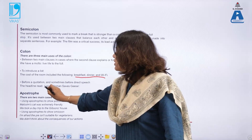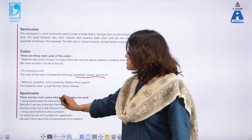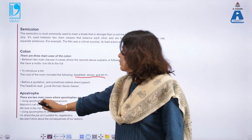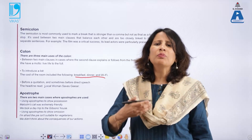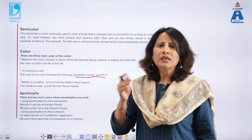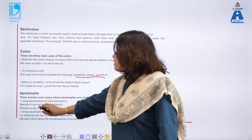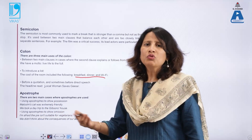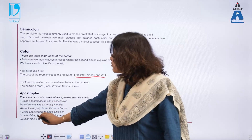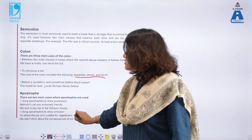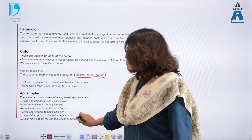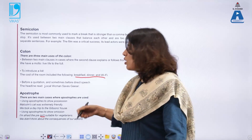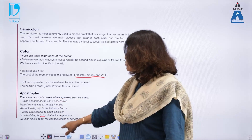There are two main cases where apostrophes are used. First, to show the possessive case — for example: 'Malcolm's cat was extremely friendly,' 'a boy's pen,' 'a girl's scarf,' 'we took a day trip to the Gibson's house.' Second, to show omission — for example: 'I'm afraid the pie isn't suitable for vegetarians' and 'we didn't think about the consequences of our actions.' Understanding when to use possession versus omission is key.